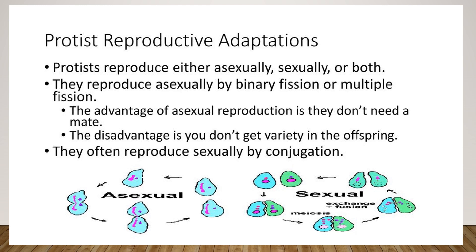Reproduction adaptation in protists: protists reproduce using either sexual or asexual means, and some can use both. They reproduce asexually by binary fission or multiple fission, while those that reproduce sexually do so via conjugation.